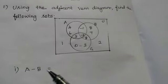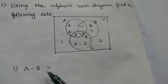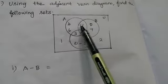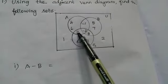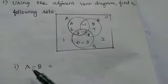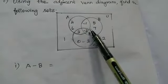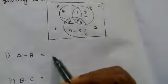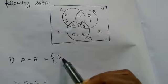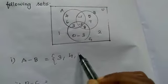Now first we want to find A difference B. A difference means what? Writing the elements in A only. Elements in A only. A is there, elements in A. Now tell me what are the elements in A: 3, 4, 6.